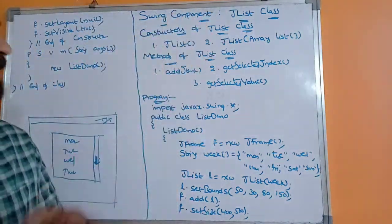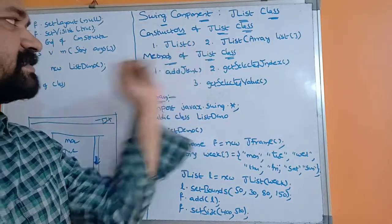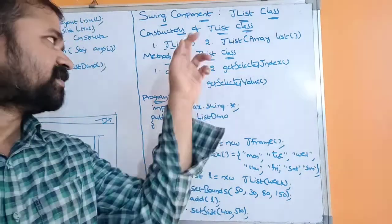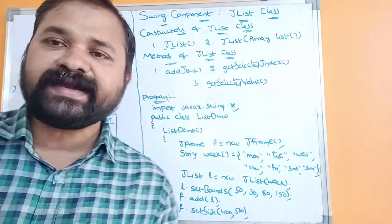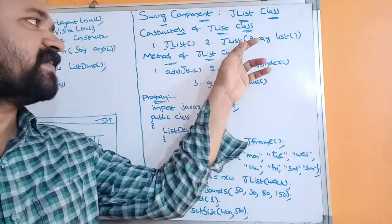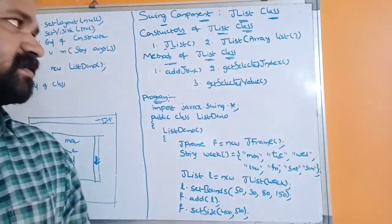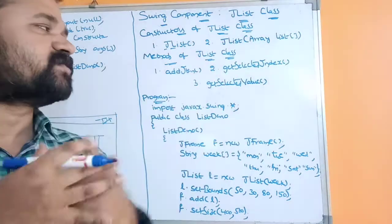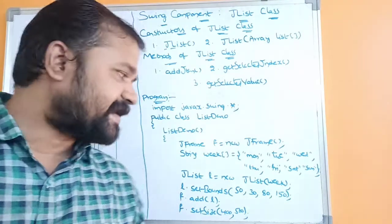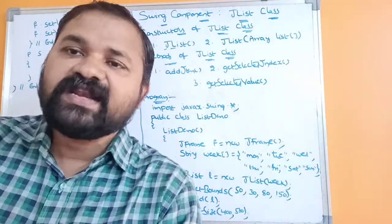Now let's see the constructors of the JList class. The first constructor is JList() — where J and L are uppercase letters — and it creates an empty list with no items. The second one is JList(array) — if this constructor is used, then the list contains all the items of the array. If the array contains seven items, then all seven items will be displayed in the list.